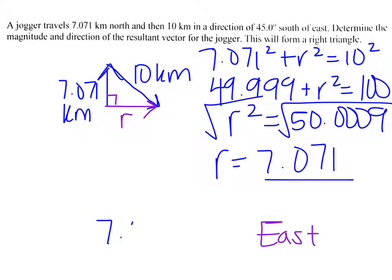So you've got 7.071 and your units are kilometers, because that's what we were using up here in our question. And then the direction is east, and we got that from just looking at our sketch since we know it forms a right triangle. So I hope this helps, thanks for watching.